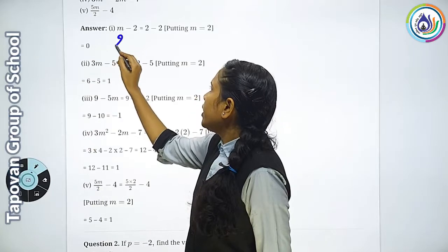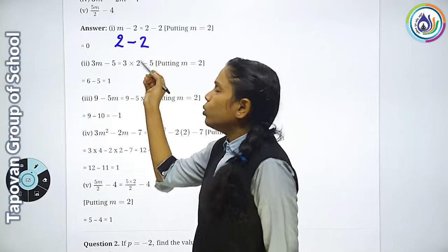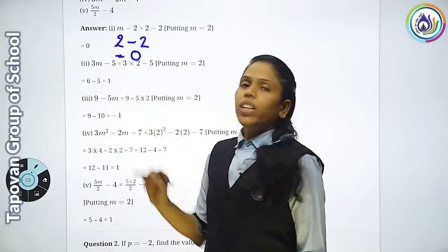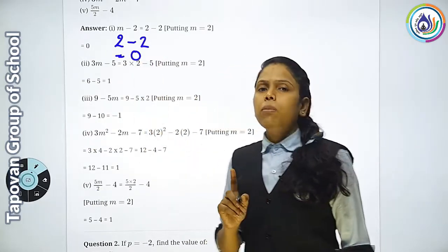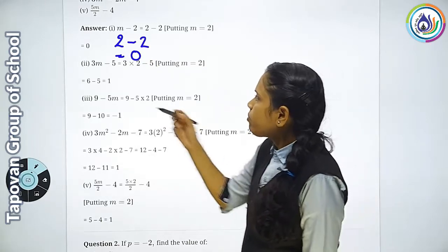m की जगह पर हम क्या लिखेंगे? 2-2. तो 2 में से 2 गए तो कितना बचा? 0. यानि m की value अगर हम रख रहे हैं तो answer 0 आ रहा है।